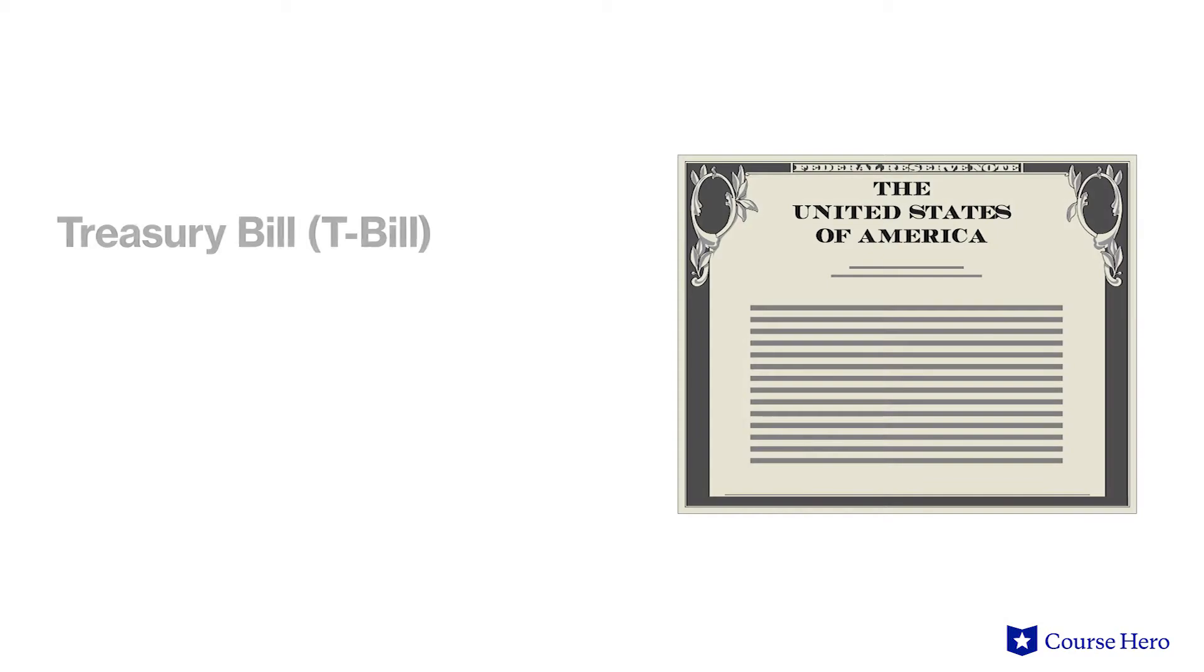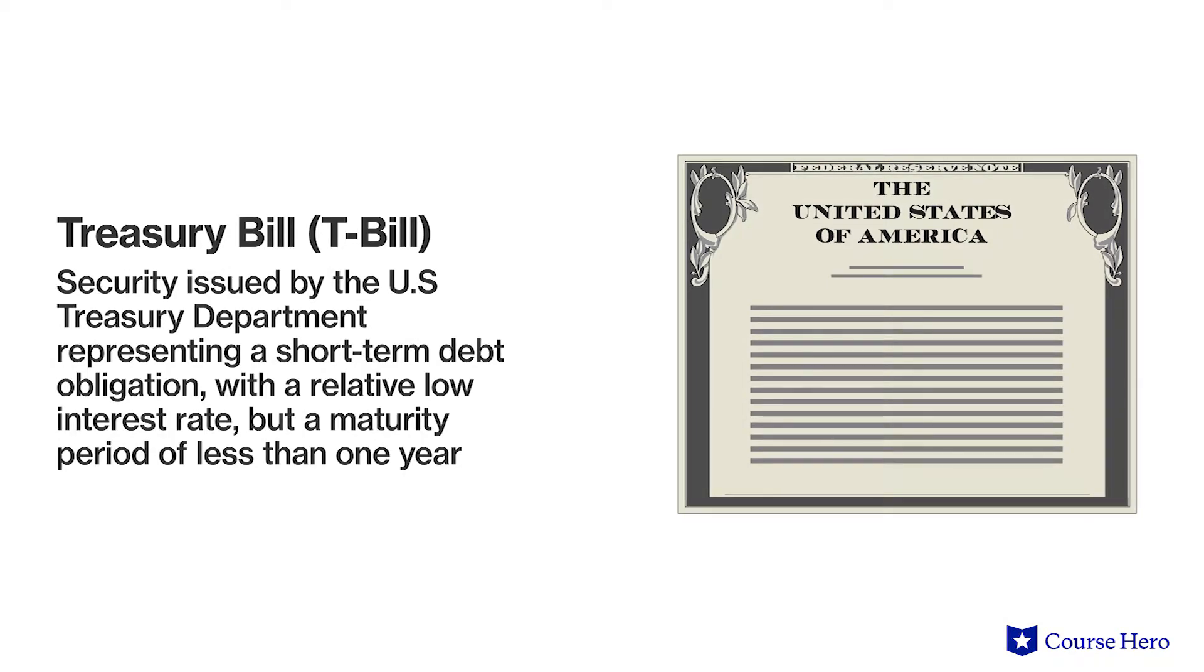The Fed can expand the money supply through the purchase and sale of U.S. government securities, such as treasury bills. A treasury bill is a security issued by the U.S. Treasury Department, representing a short-term debt obligation with a relatively low interest rate, but a maturity period of less than one year.